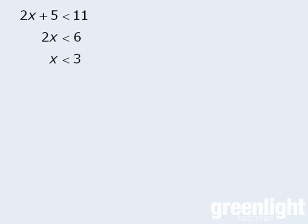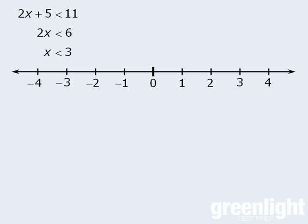Another way to show this solution is to use a number line. To show the solution x is less than 3, we'll first draw a circle around 3 to denote that 3 is not one of the solutions. Then, to represent less than 3, we'll draw an arrow extending without end to the left. Any number lying on the blue line is a solution to the inequality 2x + 5 < 11.